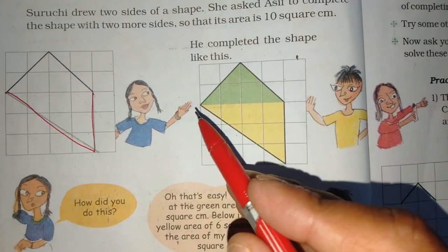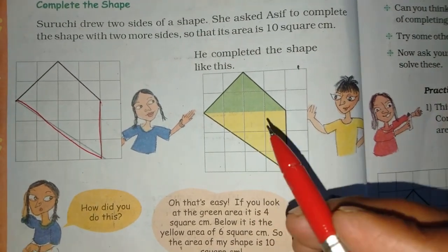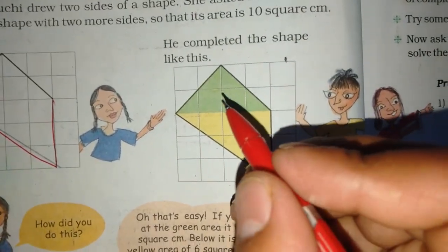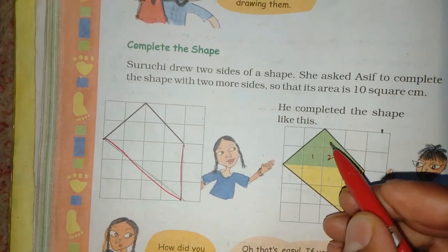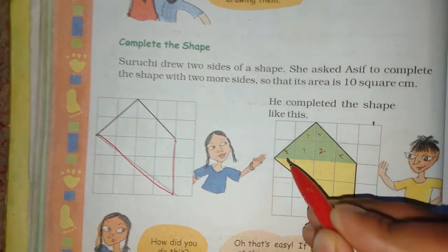The green area is 4 square cm. Let's count to find the square cm: 1, 2, 3, 4.